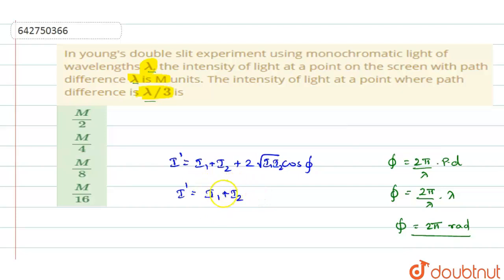So it becomes 2 into root of I₁ plus I₂. And thus you will substitute everything: 2 into root I₁ into I₂ into cos 2π. So this becomes I' will be equal to 4I₁.